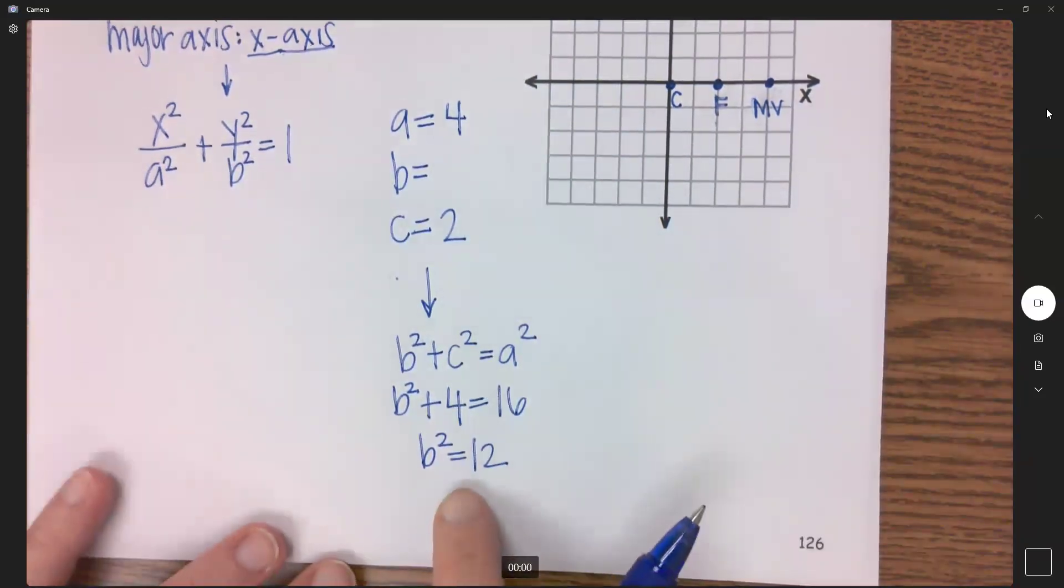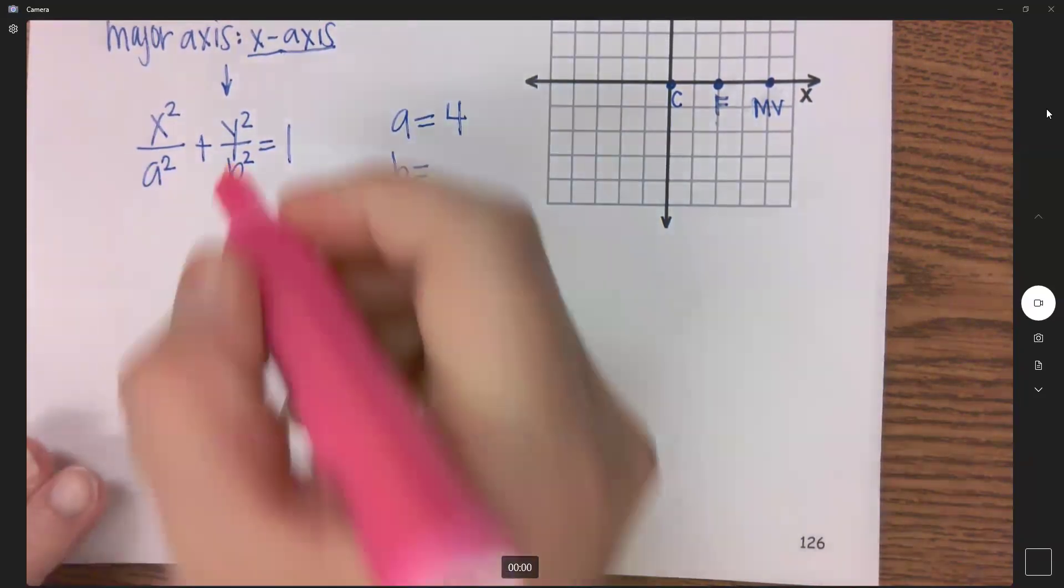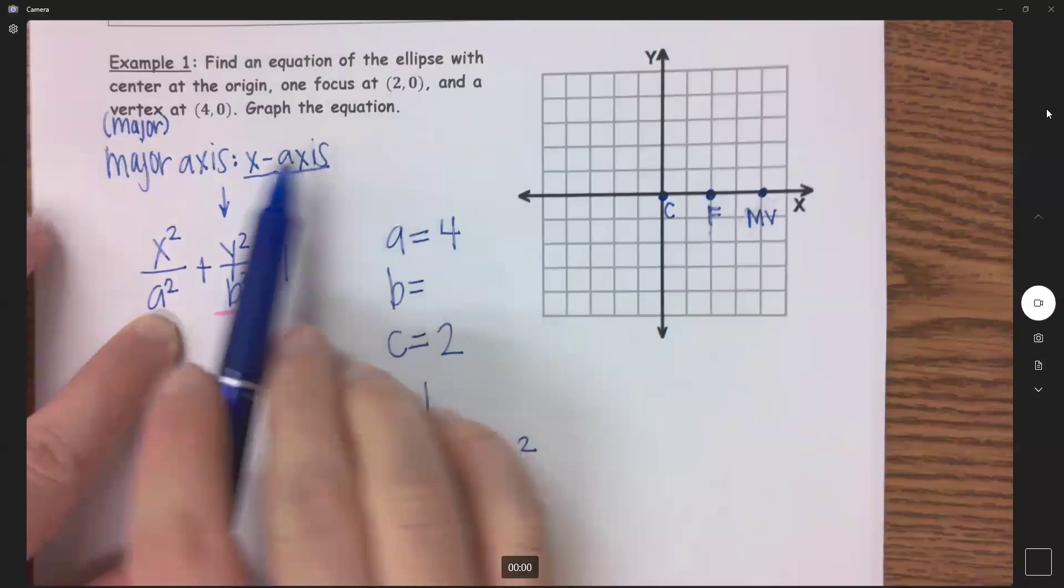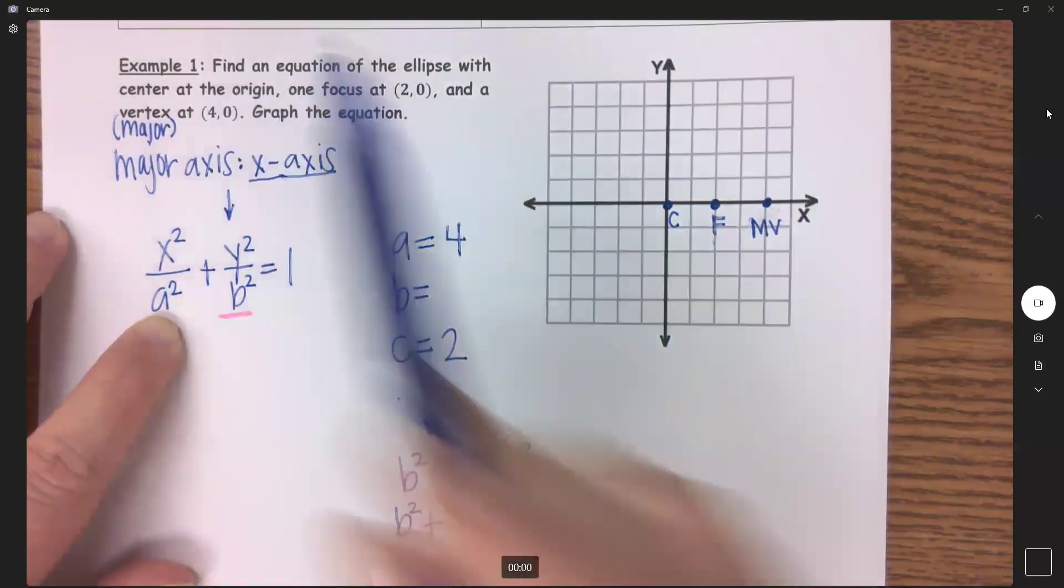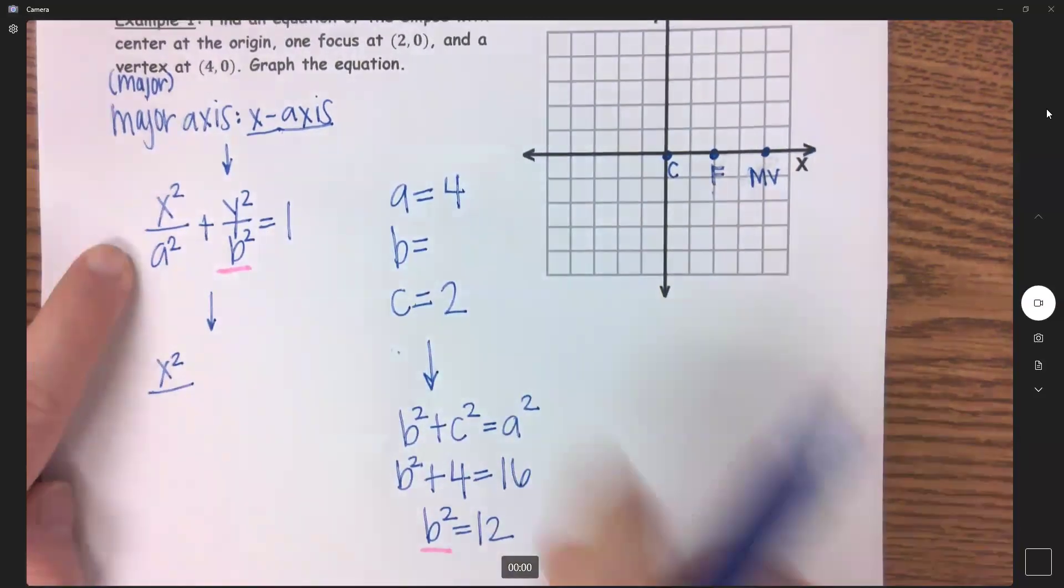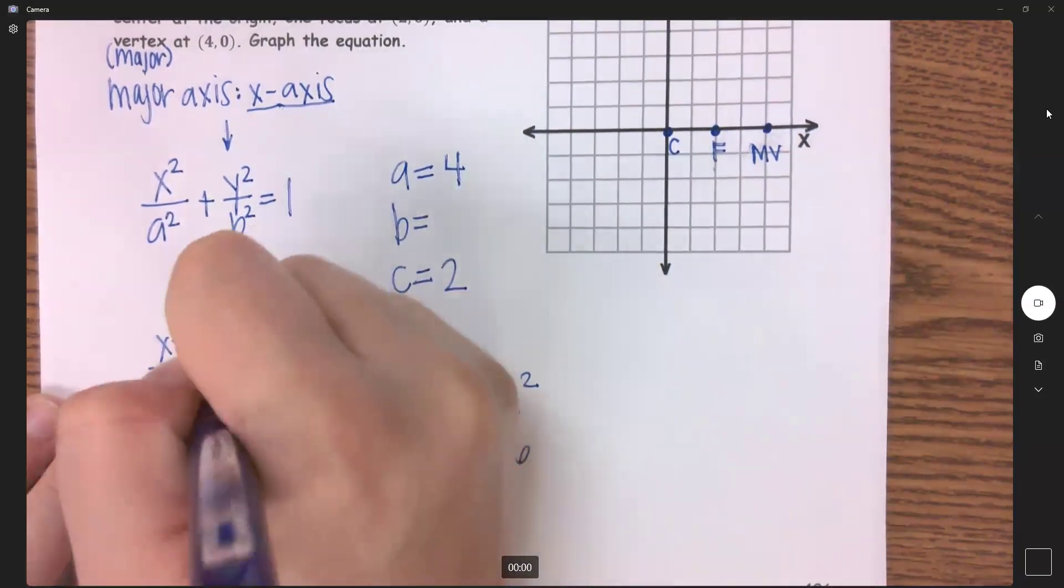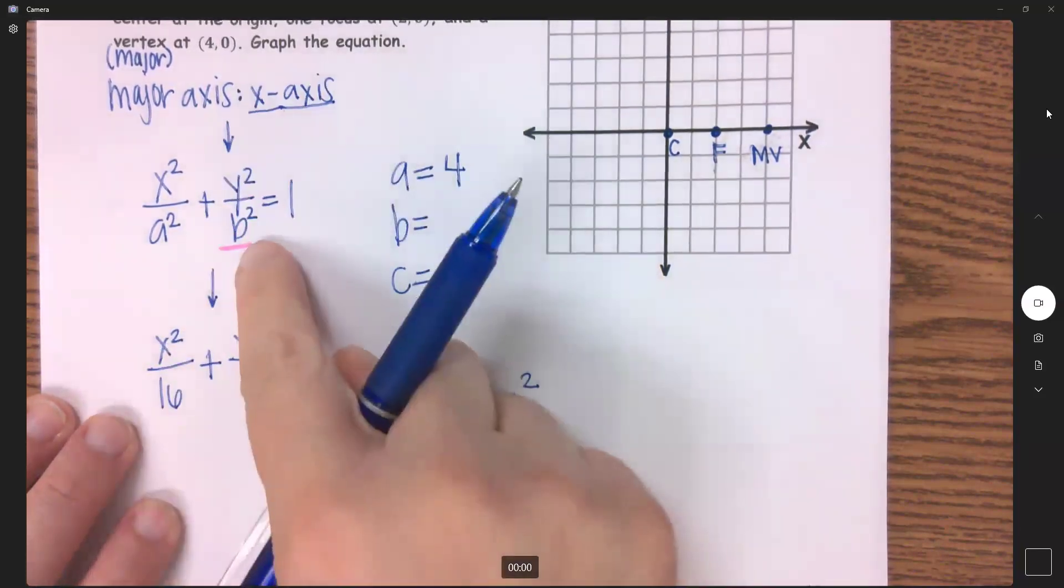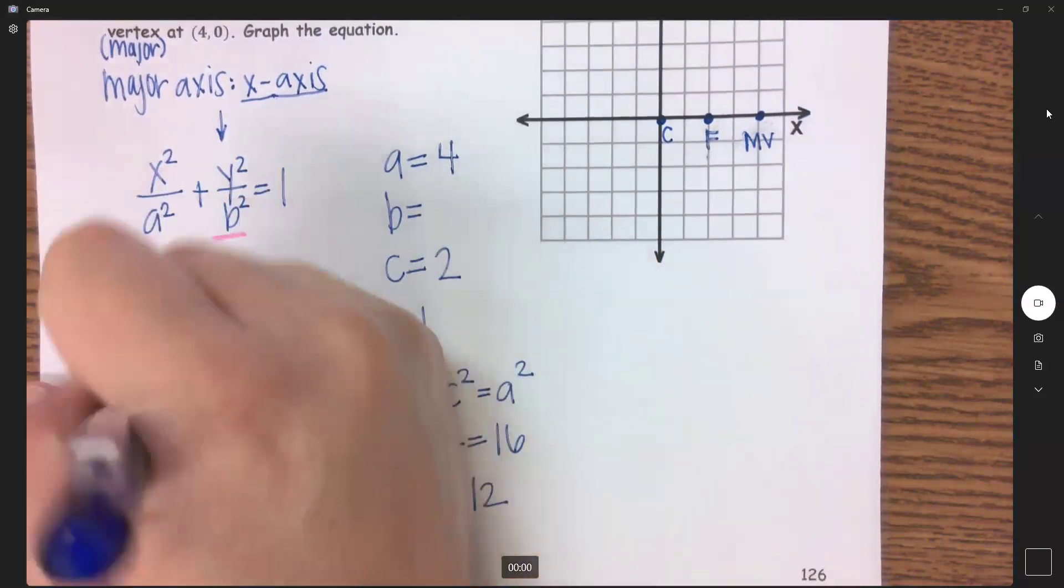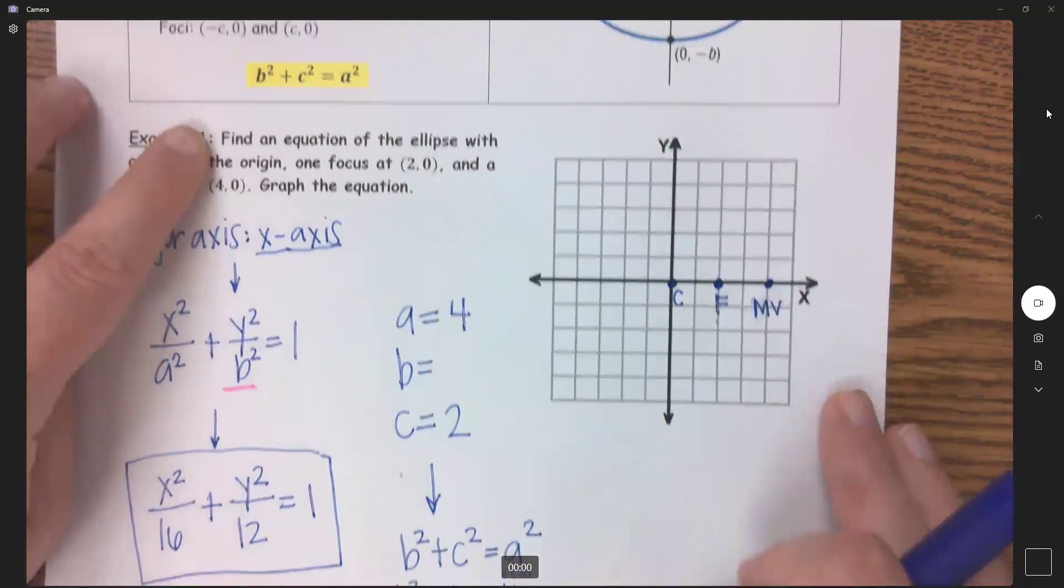Now, when I go to graph, I do need to know what B equals, but this formula just means B squared. So we need B squared, and we have solved for B squared. So I can write my formula, which is what it asked me to do, find the equation. So now we have X squared over, my A squared is 4, or my A is 4, so A squared is 16, plus Y squared over B squared, which we found down here to be 12, equals 1. So there's the first half of this. I have found the equation.